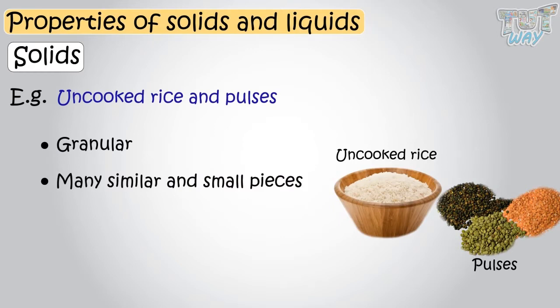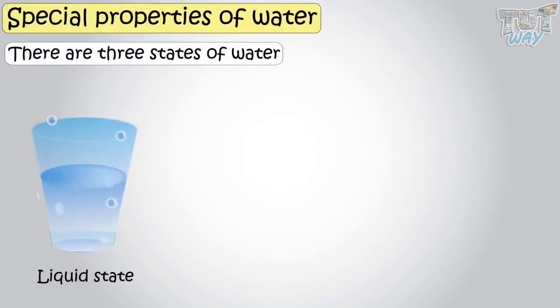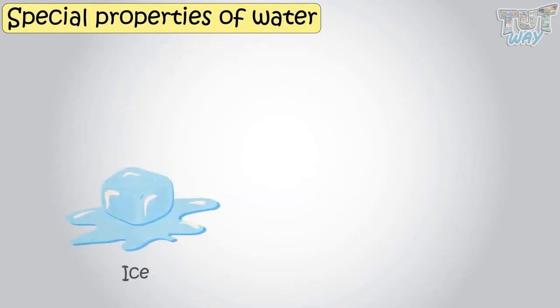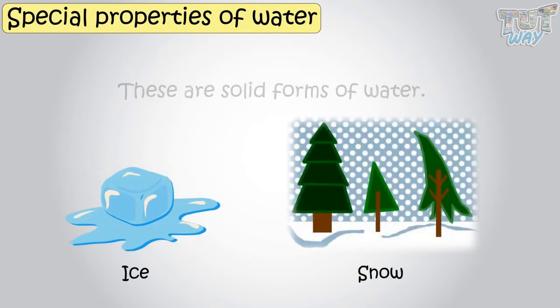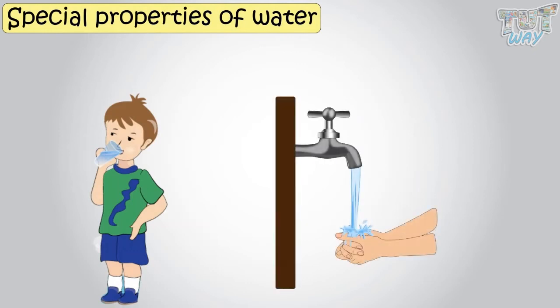Now let's see some special properties of water. Water can be a liquid, solid, or a gas even. Like ice and snow are solid forms of water, whereas water we drink and use is liquid form of water.